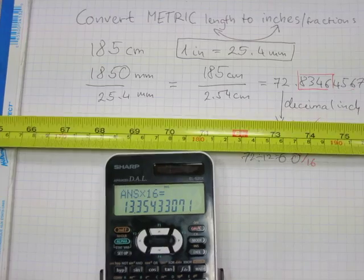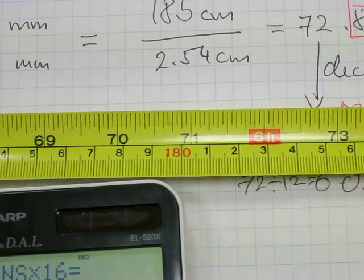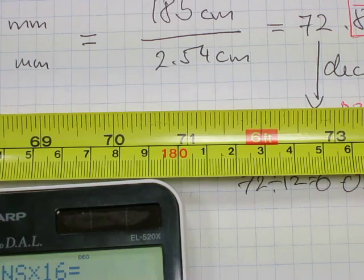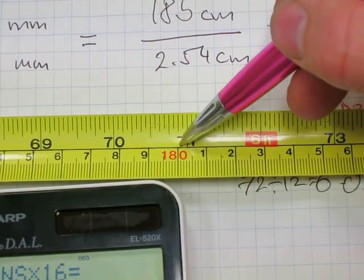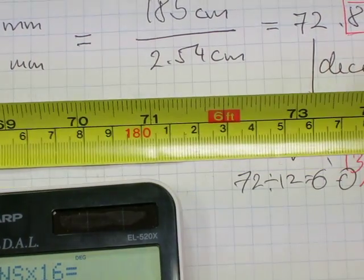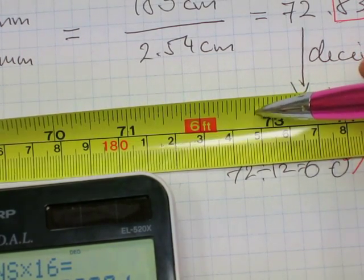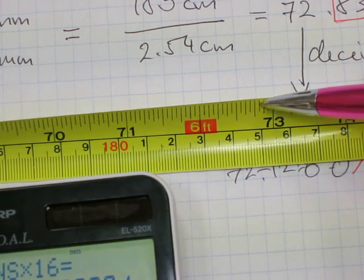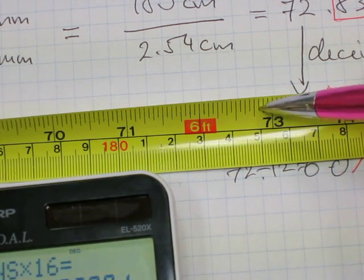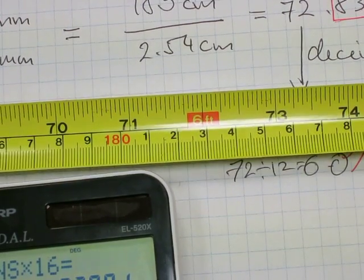185 centimeters can be found right about there where the arrow is pointing. Here is 180 centimeters and here is 185 centimeters. It is a little over 6 feet, just like we calculated, and we calculated 13 16ths of an inch. 3 quarters is 12 16th, and 13 16th is there, that line there. And that pretty much lines up with the 185 centimeter mark. That's pretty close. So this conversion works.